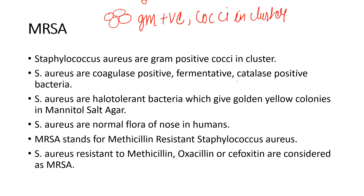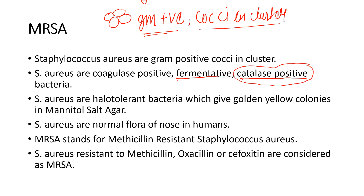Whenever there is a Gram-positive coccus in clusters, we have to look for the catalase test. If the catalase test is positive, it can be Micrococcus or Staphylococcus. To differentiate between them, we do the oxidative/fermentative test. Staphylococcus aureus and the Staphylococcus group are fermentative, whereas Micrococcus is oxidative.